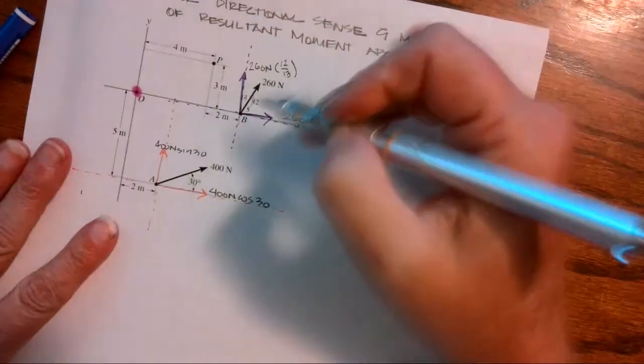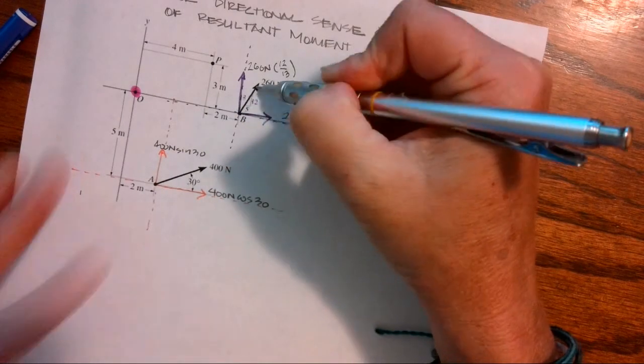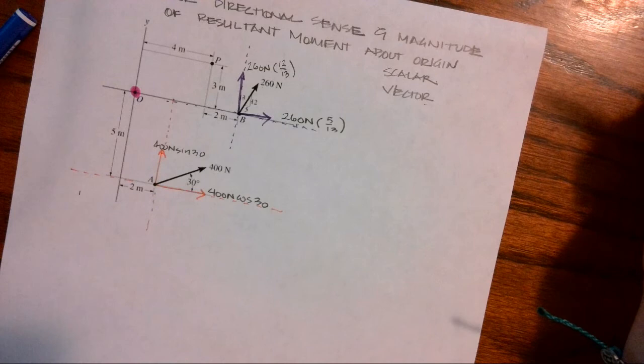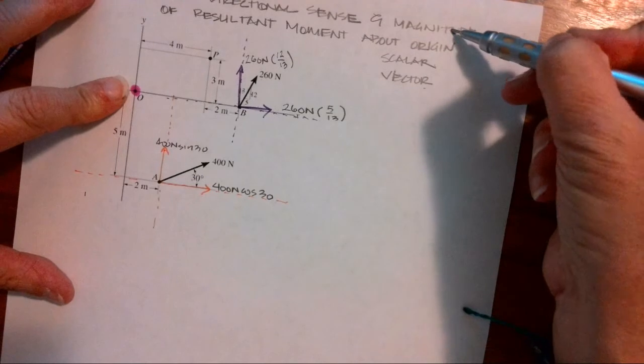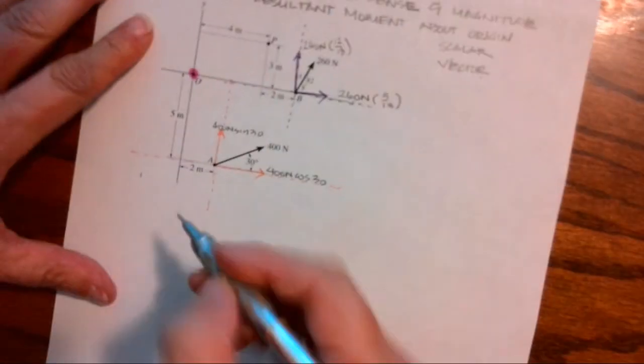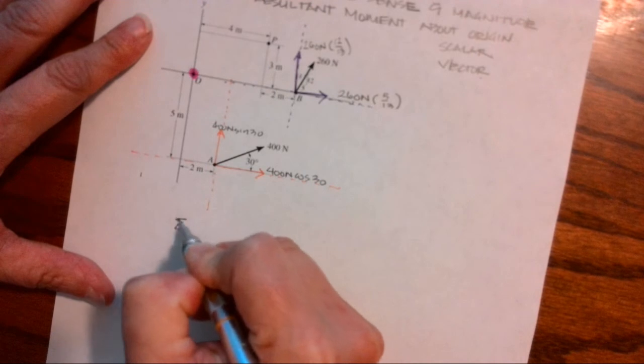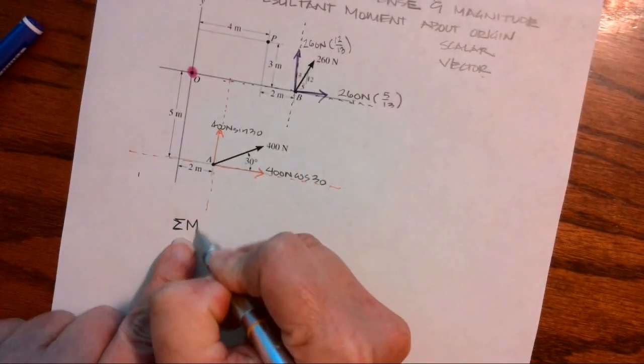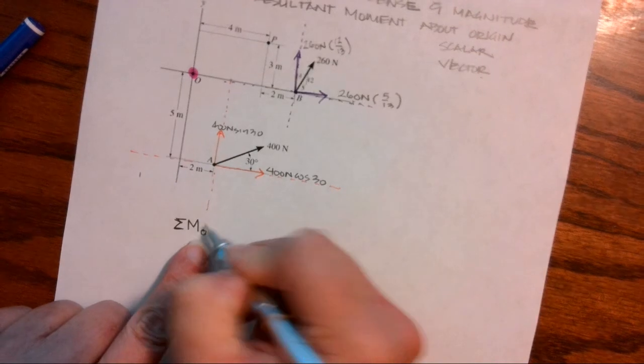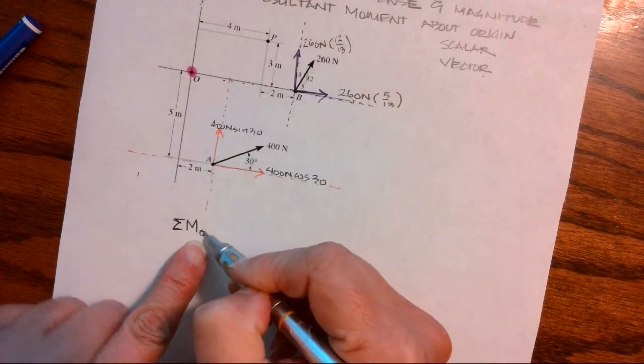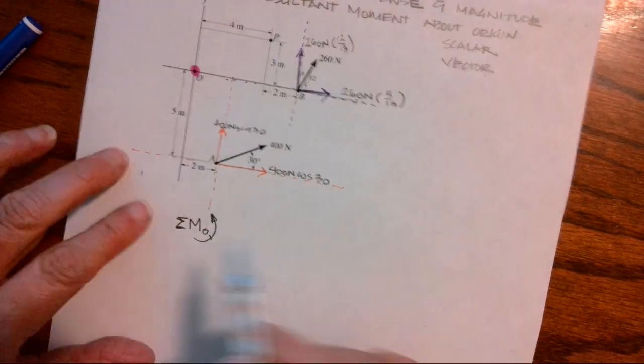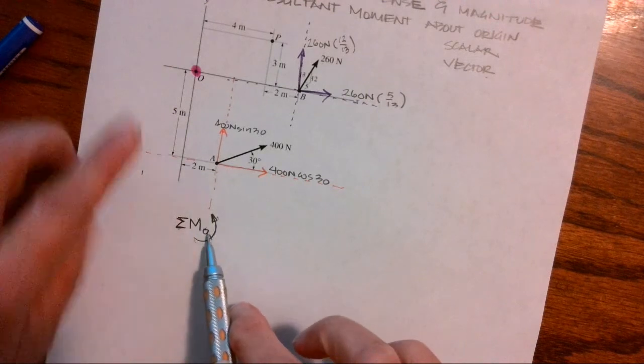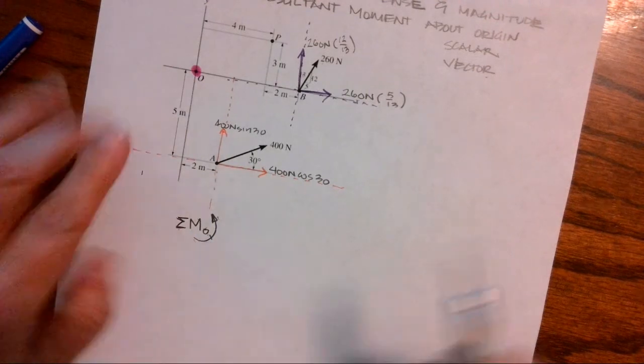So I have the X and Y components of these vectors. And now we can start with summing moments about the origin to figure out the magnitude and the directional sense. So I'm going to start with my rule that I'm using is I am going to sum moments, not forces, moments. And I'm going to sum about O, the origin, and I am going to be using right hand rule positive.